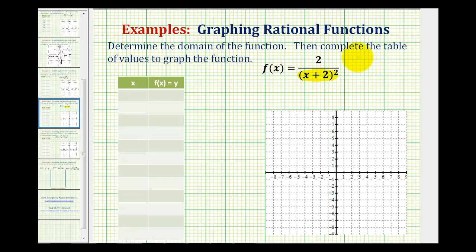Notice if we set the denominator equal to zero, it's already in factored form. This would be equal to zero when the quantity x + 2 is equal to zero, or when x equals -2. So the domain of our function would be all real numbers except x equals -2.